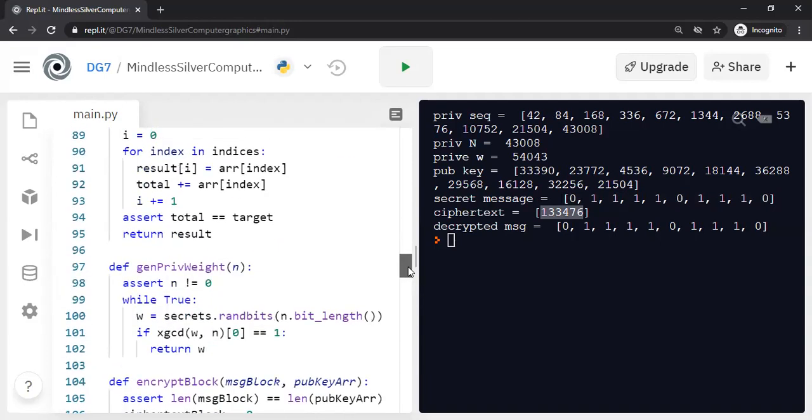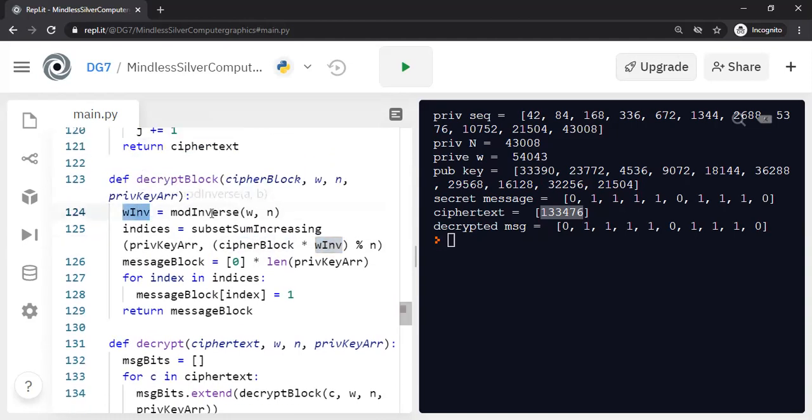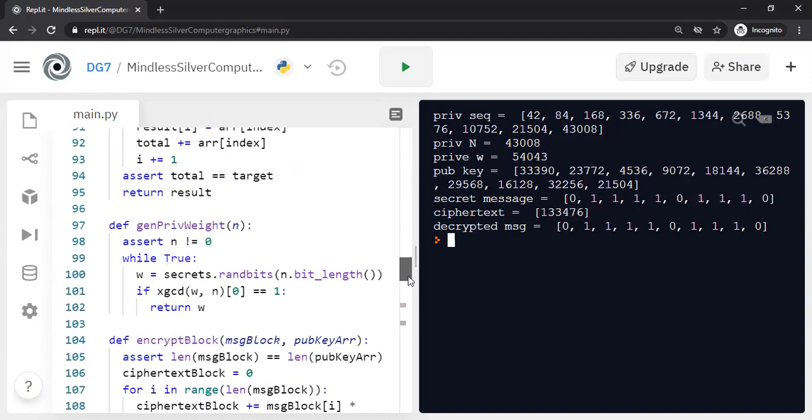Let me show you the encryption function very quickly. How is the encryption function in this case? The encryption function is extremely simple. If you wanted to encrypt one block, I'm going to only talk about only one block, exactly assuming that the message length is same as the public key length. All we are doing is just multiply the message block by public key block, which means we know exactly which bits are turned on or off during encryption. And we send this number 133476. Now let's talk about decryption. How will decryption work?